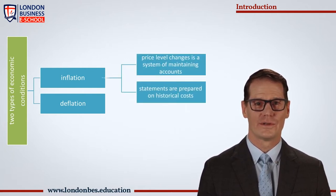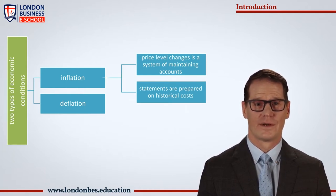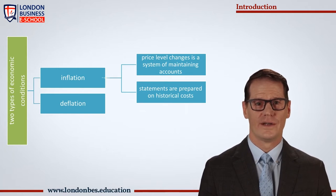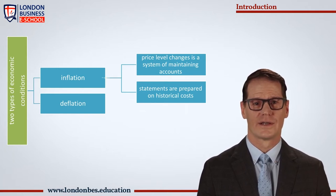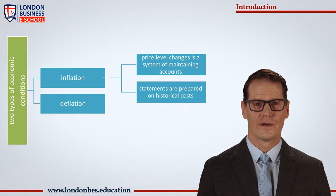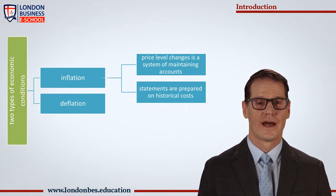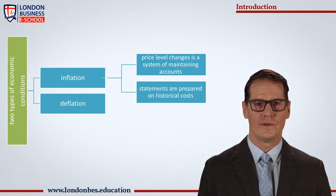This is so because the financial statements are prepared on historical costs. Accounting for price level changes is a system of maintaining accounts in which all items in financial statements are recorded at current values. This system ascertains profit or loss and presents the financial position of the business on the basis of current prices. It is also called inflation accounting.